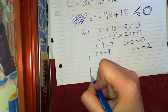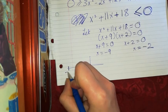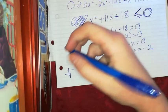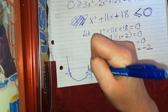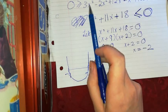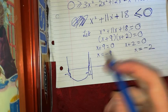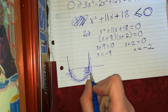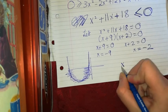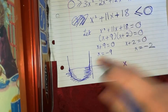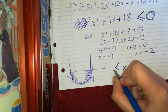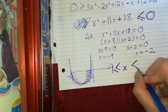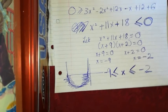Now I'll draw the curve. I have roots at x equals minus 9 and x equals minus 2, and because it has a positive x squared coefficient, it's u-shaped. I'm asked where the expression is greater than or equal to 0, so I look at where the curve is above or on the x-axis. That gives x greater than or equal to minus 9, and x less than or equal to minus 2. However, x cannot equal minus 2 since that makes the original denominator zero, so the answer is minus 9 less than or equal to x less than minus 2.